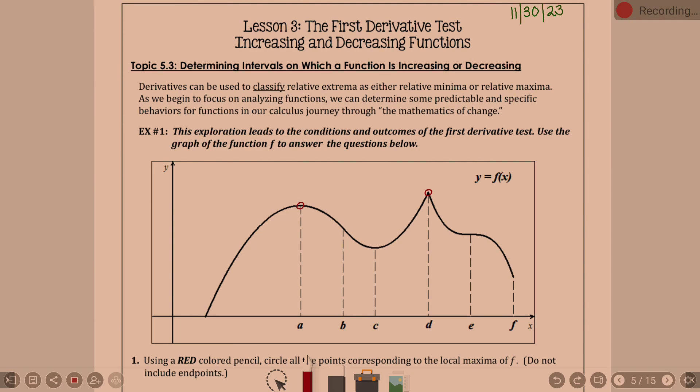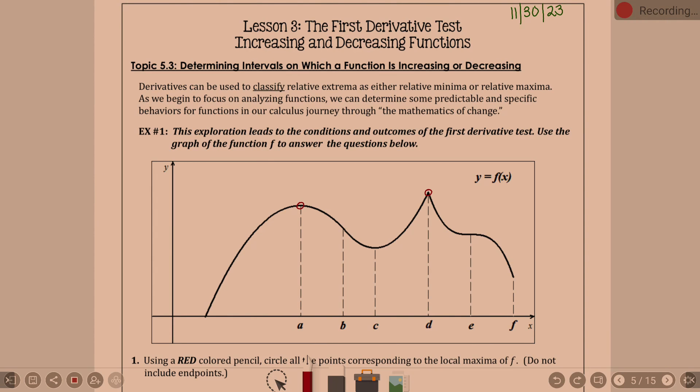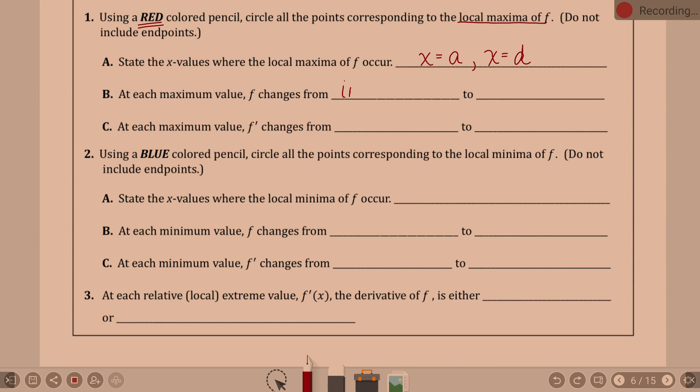State the x value where the local maxima of f occur. That was x equals a and x equals d. At each max value, f changes from what? As you look at each max value, f is doing what on the left and then on the right? It's increasing and decreasing. Is that true at d? Increasing, decreasing. So we are saying that it changes from increasing to decreasing.